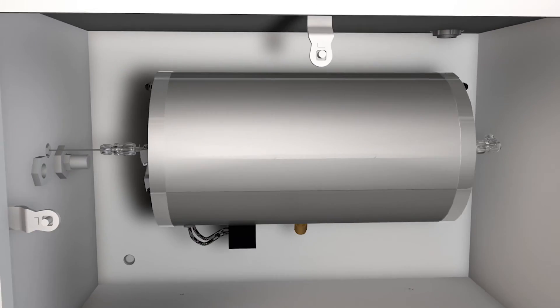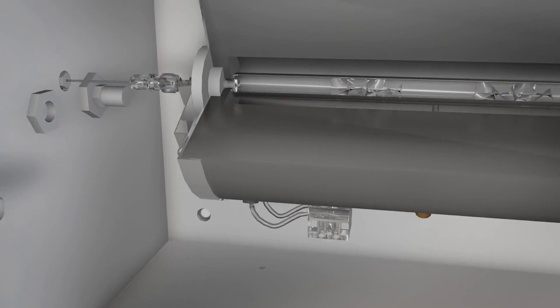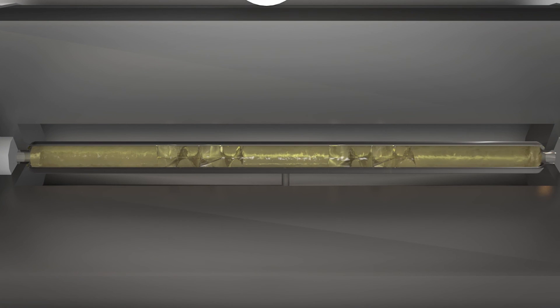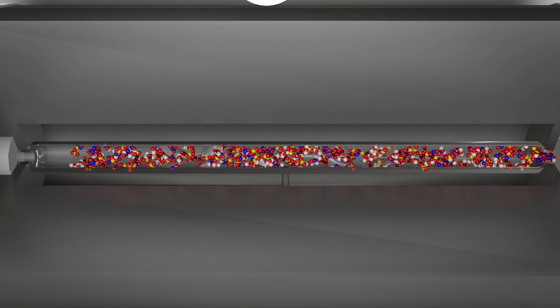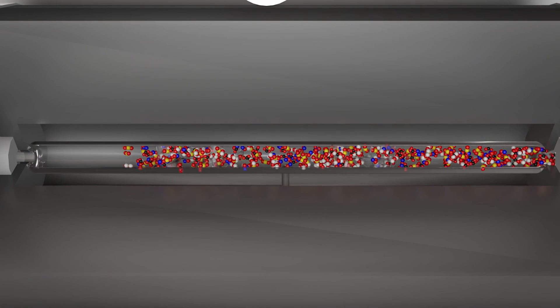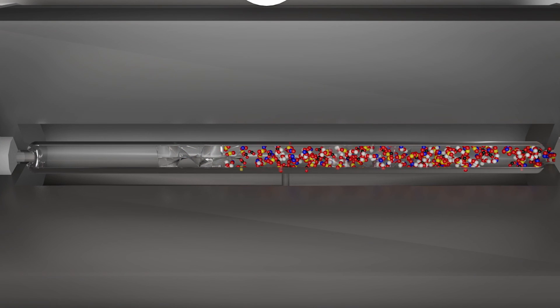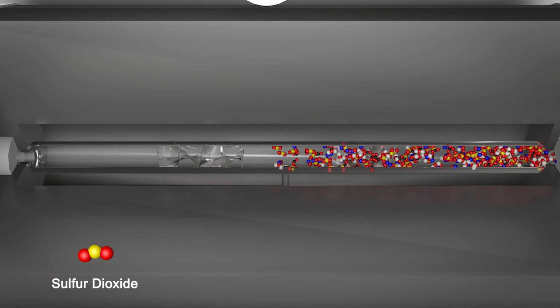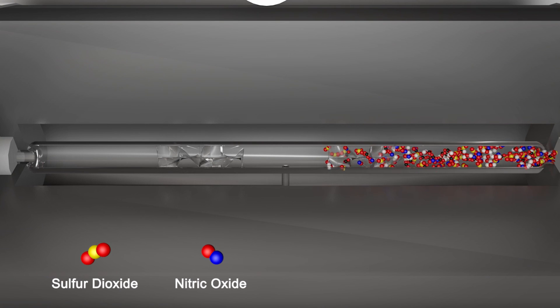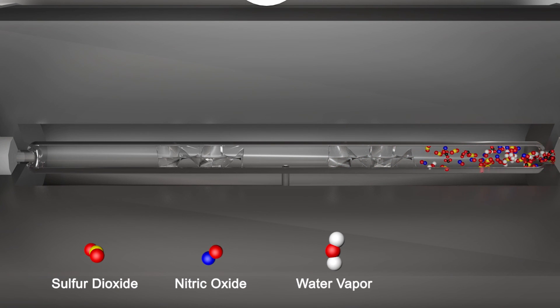As the sample is moved into the furnace, it is mixed with combustion gas and injected into Antec's unique furnace. Once in the furnace, the sample is completely combusted at 1,050 degrees Celsius. This converts all sulfur species to sulfur dioxide and nitrogen to nitric oxide. The hydrocarbons are converted to water vapor and carbon dioxide.